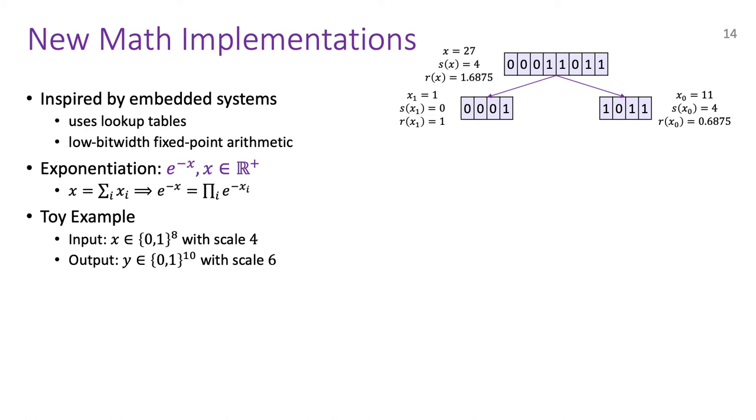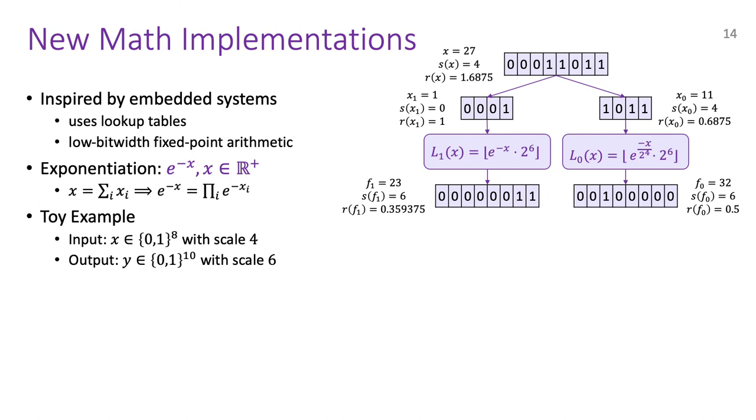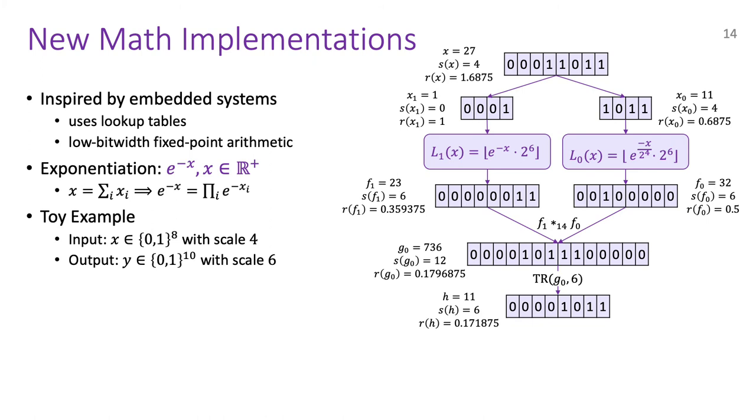We start with our input x, the fixed-point integer 27 with scale 4 and real value 1.6875. First, we use digit decomposition to split x into two 4-bit chunks x0 and x1. Note that the scale of x1 is 0 and the scale of x0 is 4. Next, x0 and x1 are fed into lookup tables that exponentiate their real values and then convert the results to fixed-point integers with scale 6 and bit width 8. Splitting x into xs here has the advantage that much smaller lookup tables can be used which is important as the cost of lookup tables grow exponentially with the input bit width.